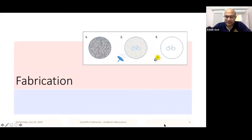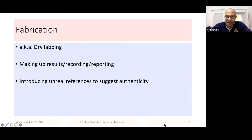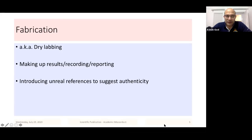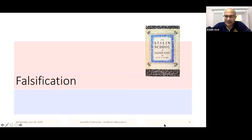What happens in fabrication, which is also called dry labbing? You make up either results, recordings, or report results which were not there. Sometimes people introduce unusual or unreal references to suggest these are authentic results. You find the data is not there, the deadlines are nearing, you need to submit, and you're not sure what next to do. Then you make up the results, you fabricate data.